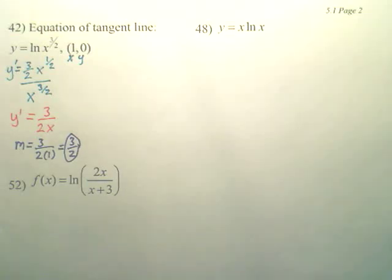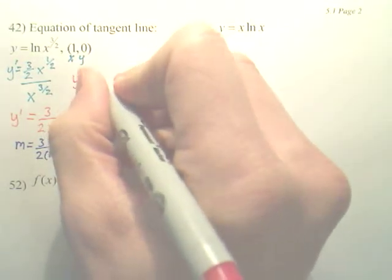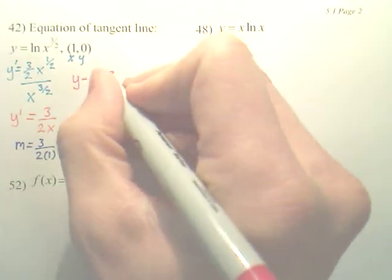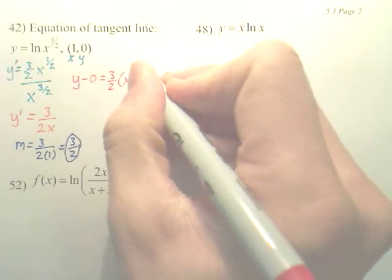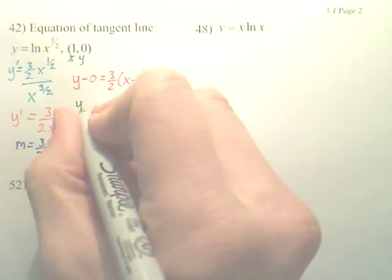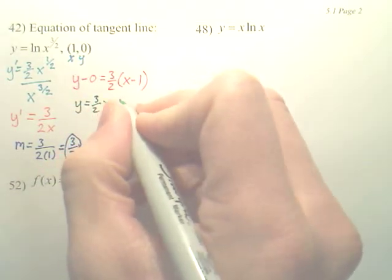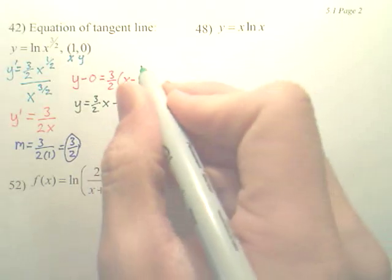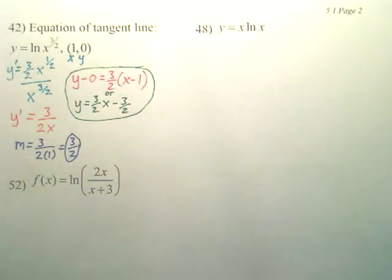I just use my simple equation. We'll do this one. So, y minus y, which is 0, equals m times x minus 1. And, you can leave it like that, or, this one's really easy, y equals 3 over 2x minus 3 over 2. Either of these are answers. They're both tangent lines at 1, 0.